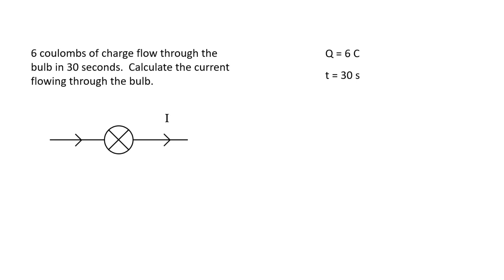First of all, let's note down the important information from the question and connect it to the symbols we use for charge and time. So Q is six coulombs and t equals 30 seconds.